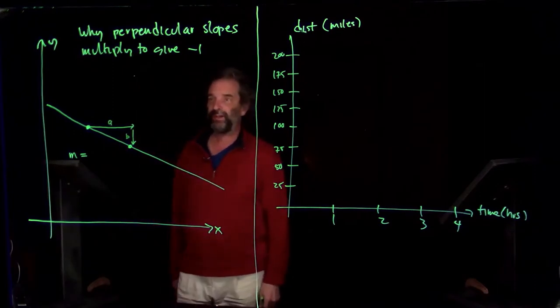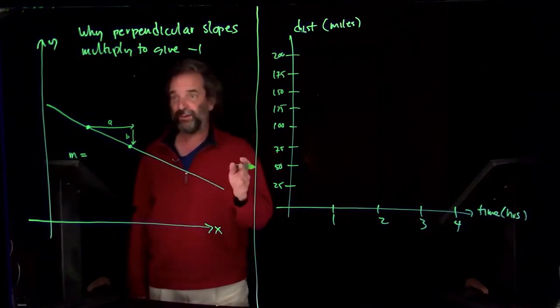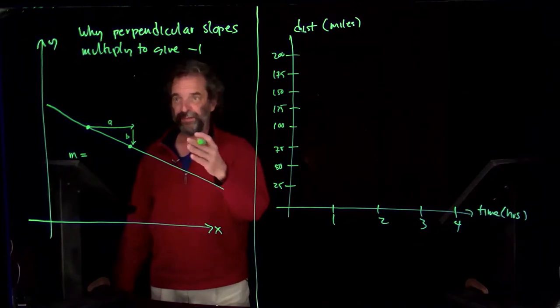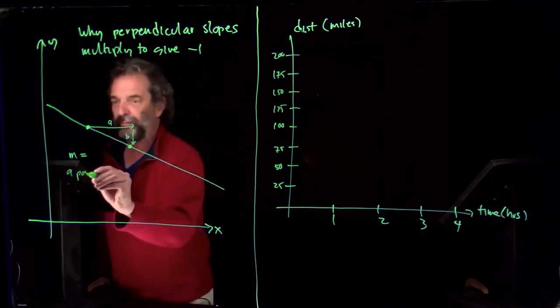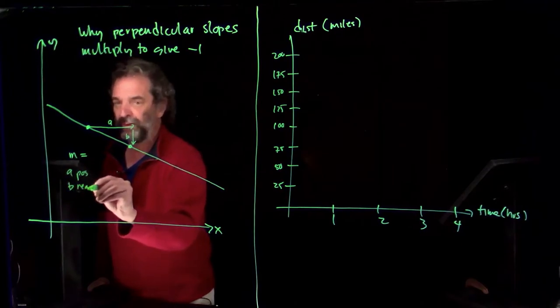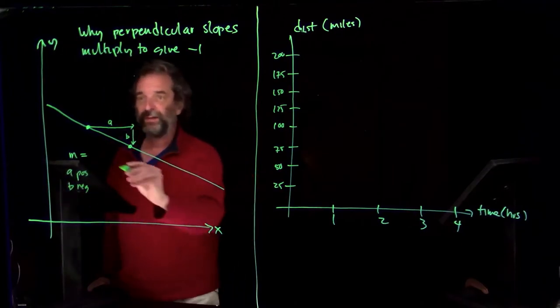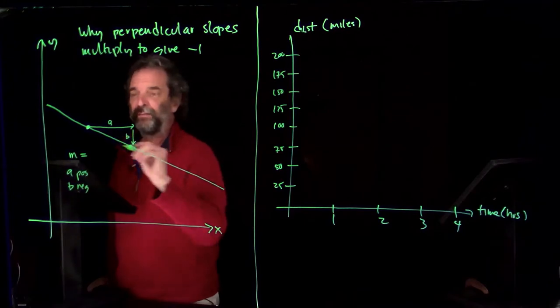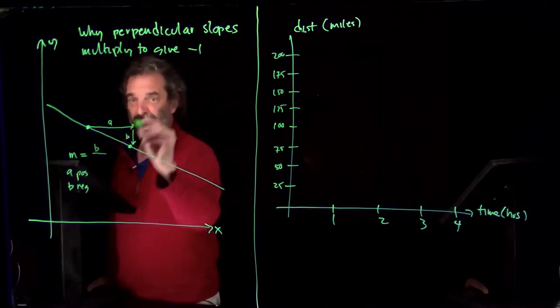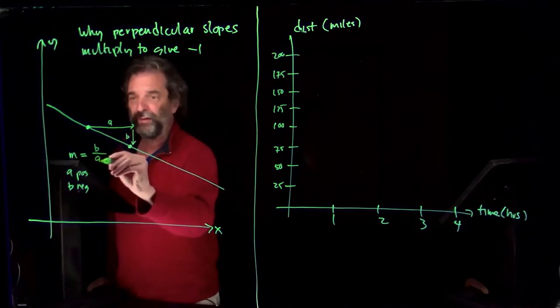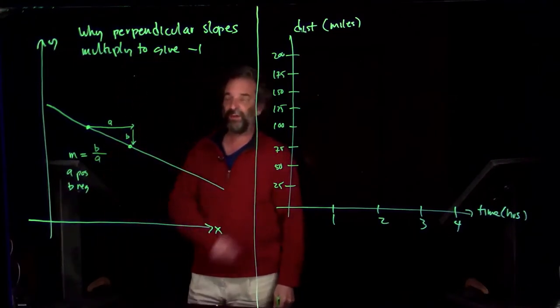And the slope is change in y, which is b, a negative value over a. So it's a negative slope, we know that. And then we're going to take this whole picture and we're going to rotate it to make something perpendicular.